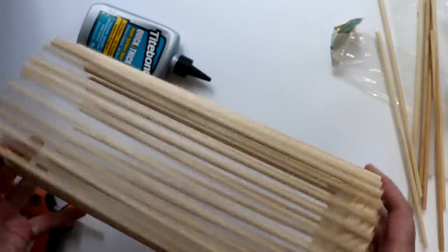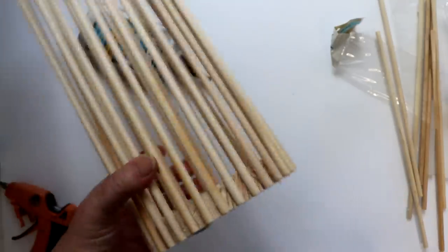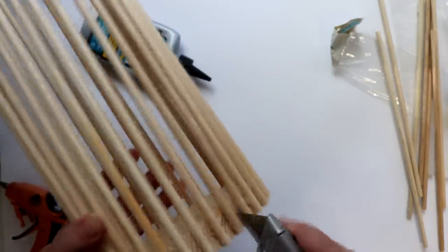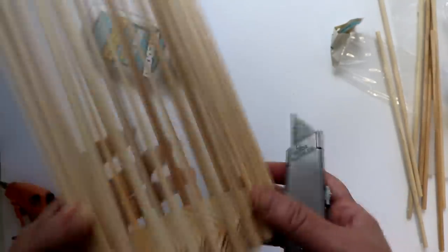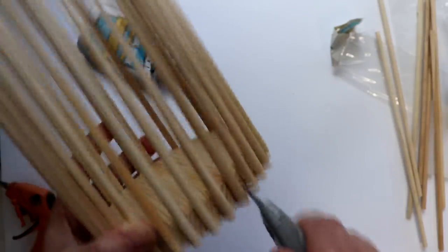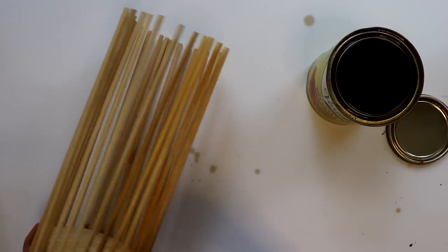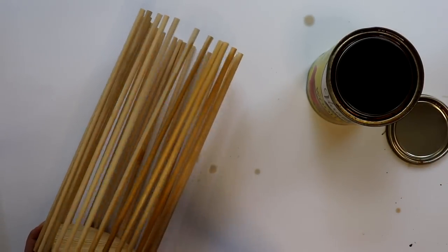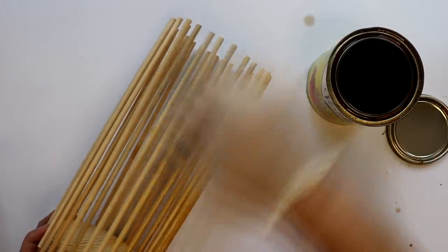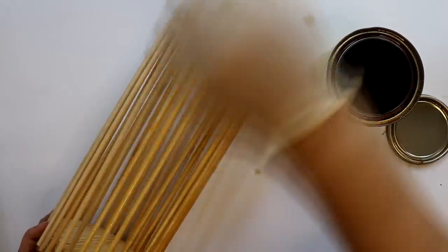Once I had all the dowels in place, I allowed the wood glue to set up for a few hours. Then I went back with a utility knife just to clean up any of the excess glue. After that, I set the lantern aside for the glue to set up fully overnight. The next day, I did decide to go ahead and stain the lantern with some Varathane stain in the color golden pecan.